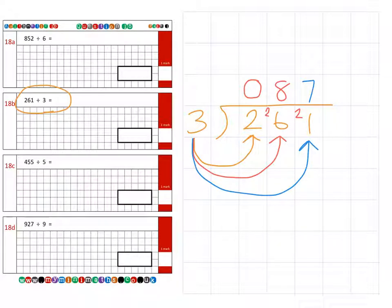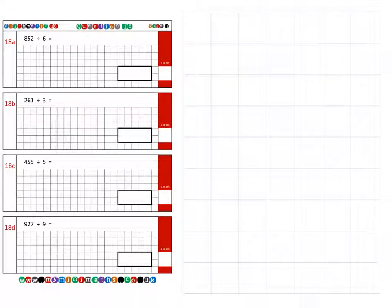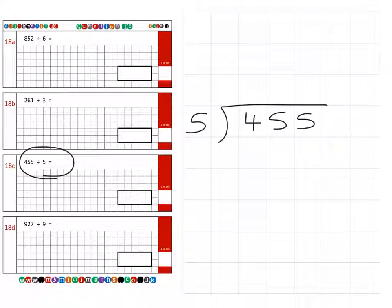On to question 18c, which is 455 divided by 5. The very first thing we're going to do is see how many fives fit into four. They don't, of course, and we haven't used any of those four, so we carry it over to the next column.